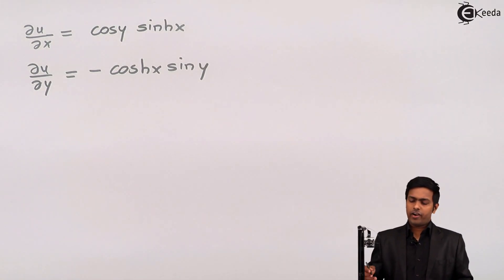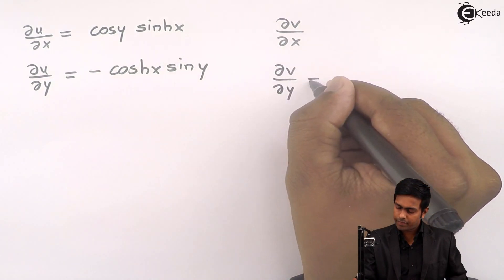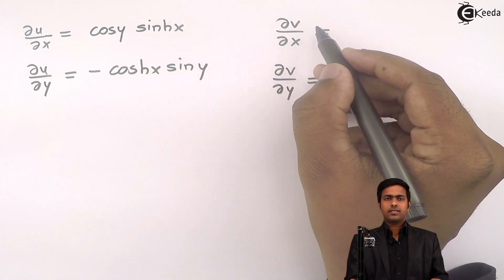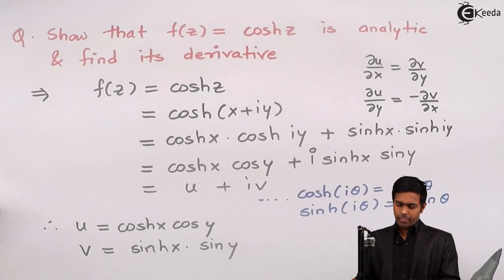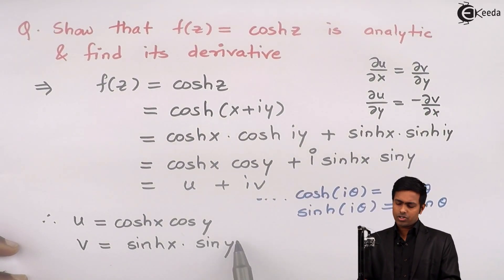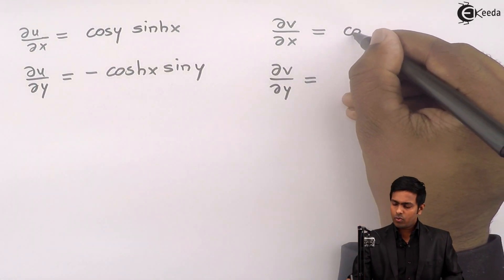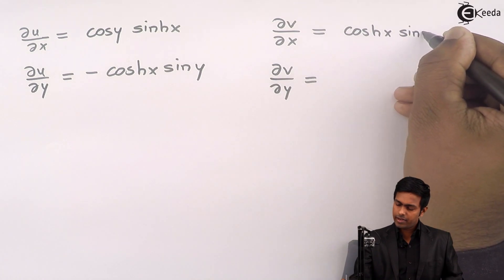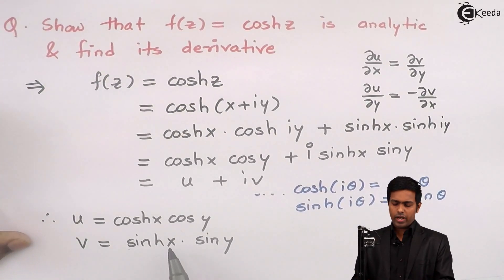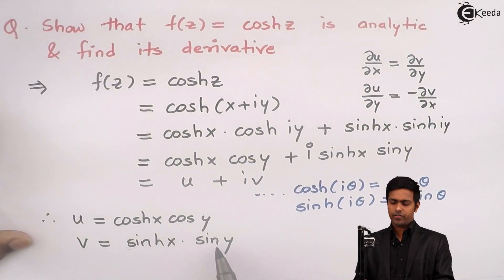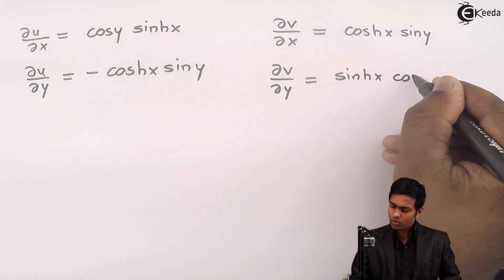Next, finding ∂v/∂x and ∂v/∂y. For ∂v/∂x we differentiate v with respect to x, treating y as constant. Since sin(y) is constant and the derivative of sinh(x) is cosh(x), we get ∂v/∂x = cosh(x)·sin(y). For ∂v/∂y, x is constant, so sinh(x) is constant and the derivative of sin(y) is cos(y), giving ∂v/∂y = sinh(x)·cos(y).